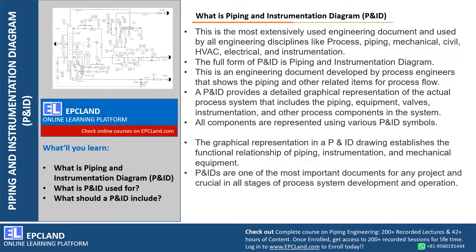P&ID establishes the functional relationship of piping, instrumentation, and mechanical equipment. If you look at this figure, you can see the equipment, the connections — these are piping — and all these are instruments. So all three components are basically shown in P&IDs. P&IDs are one of the most important documents for any project, and crucial in all stages of the process system development and operation.